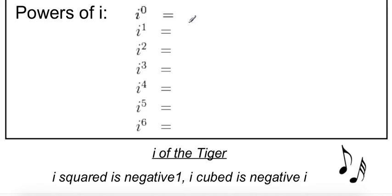Anything to the 0 power, of course, is just 1. There it is. i to the first power is just i. And then i squared is negative 1.